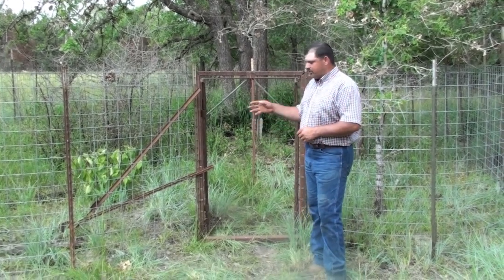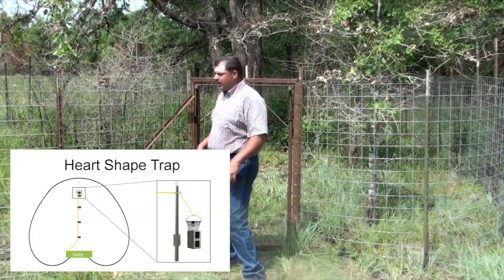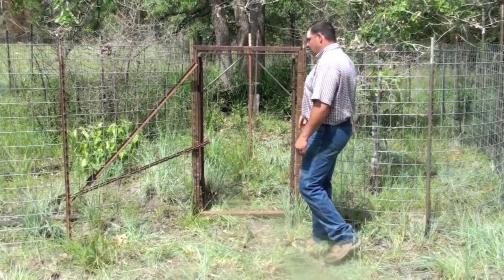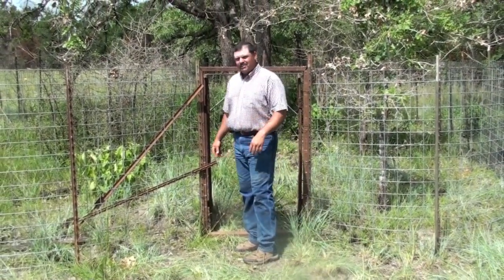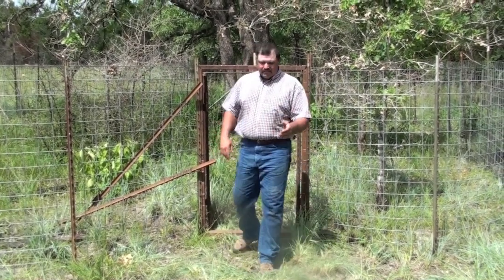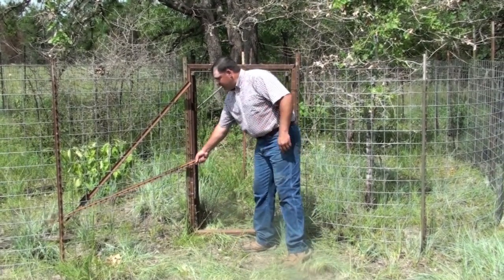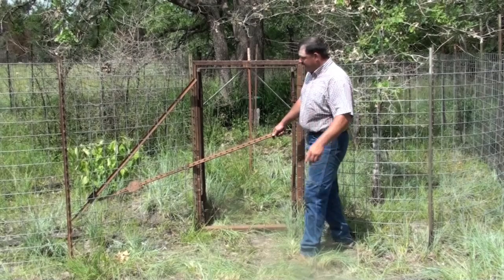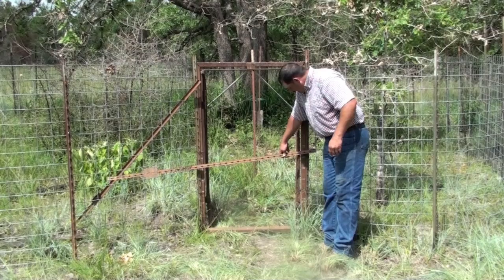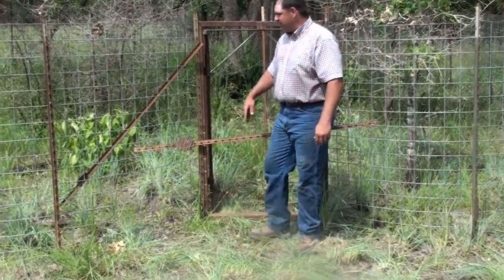The trap design we use most whenever we're trapping around livestock is this design right here. It's a cloverleaf lobed front, and what that does is it creates a funnel into the entry point of the trap. The cameras are going to tell you what your problem is with non-targets. Know the problem — is it a calf, a horse, a cow? You can then address that issue by making sure the trap is lobed out the correct way, and use line posts slid in at the height of whatever that non-target species is to repel it.